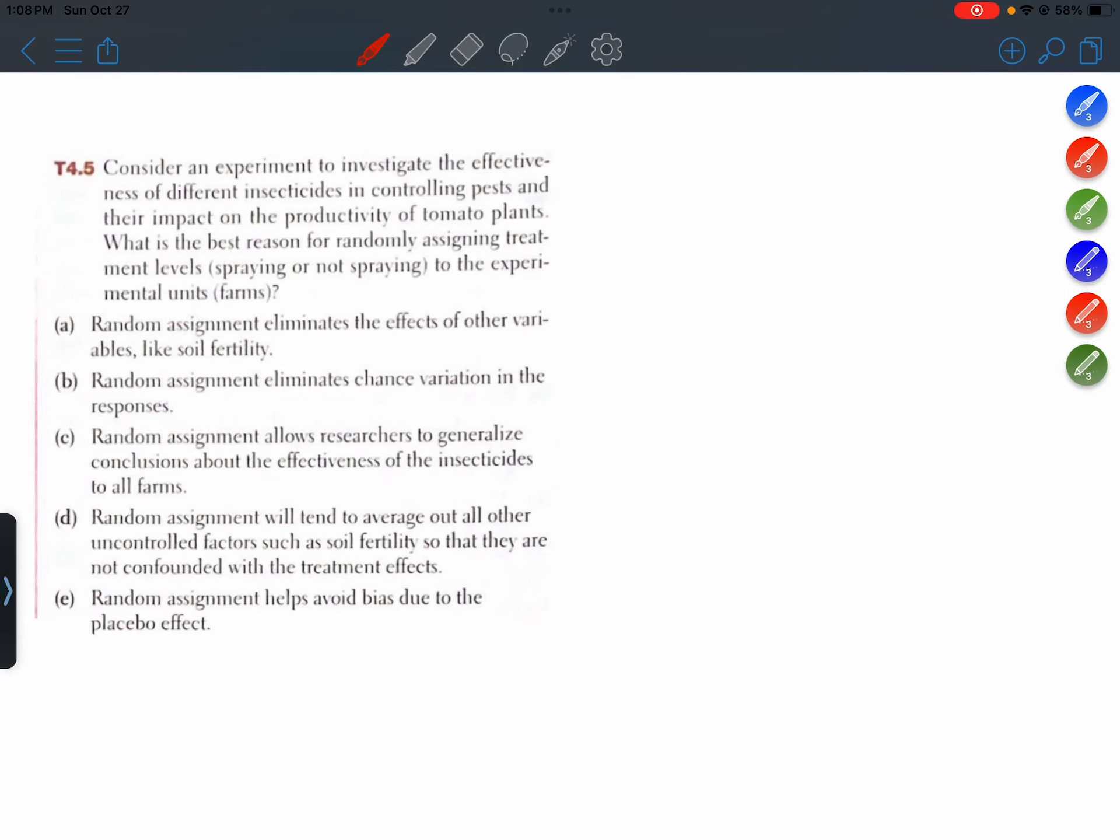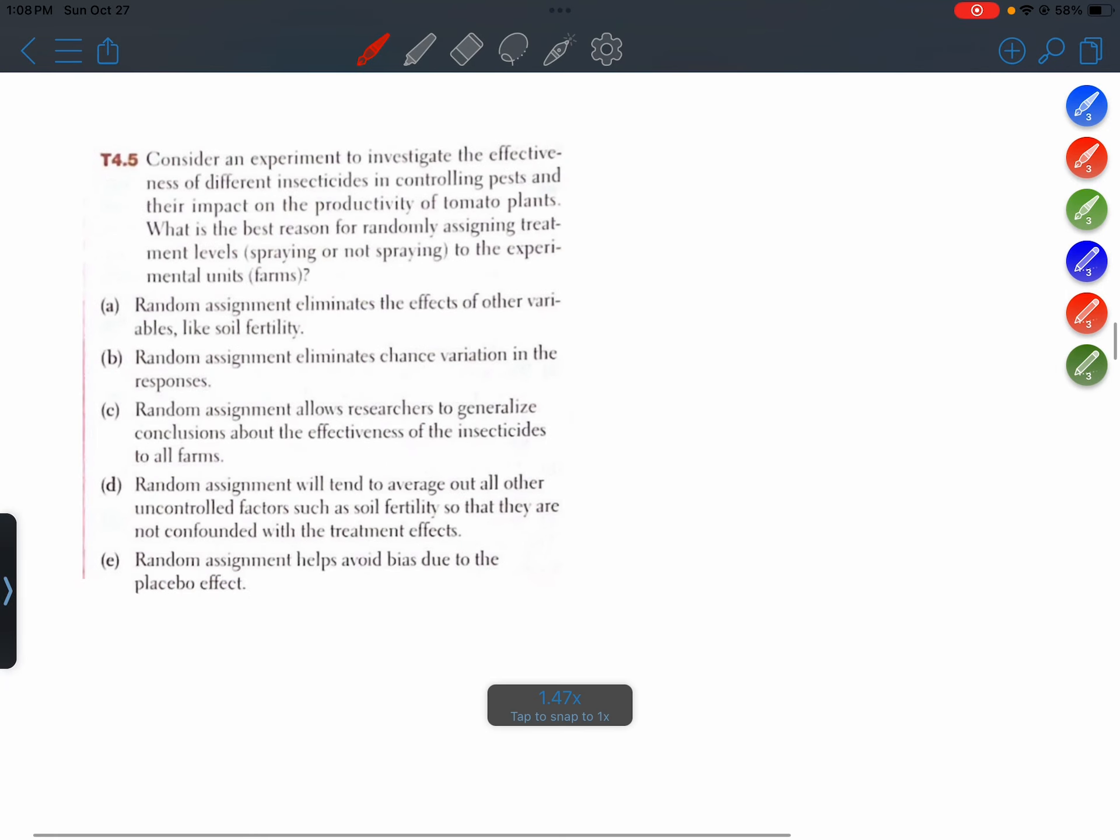T4.5: Consider an experiment to investigate the effectiveness of different insecticides in controlling pests and their impact on the productivity of tomato plants. What is the best reason for randomly assigning treatment levels, spraying or not spraying, to the experimental units, which are the farms?